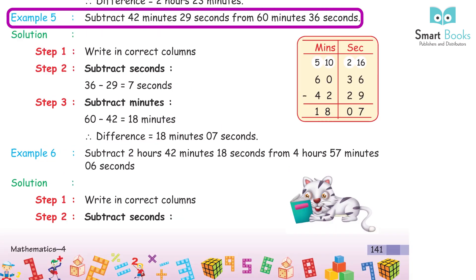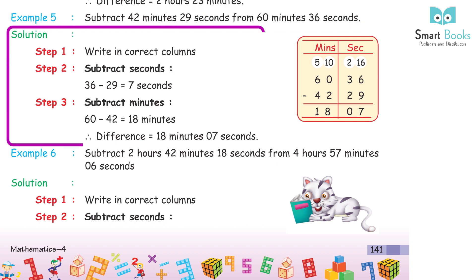Example 5: Subtract 42 minutes 29 seconds from 60 minutes 36 seconds. Step 1: Write in correct columns. Step 2: Subtract seconds — 36 − 29 = 7 seconds. Step 3: Subtract minutes — 60 − 42 = 18 minutes. Difference = 18 minutes 7 seconds.